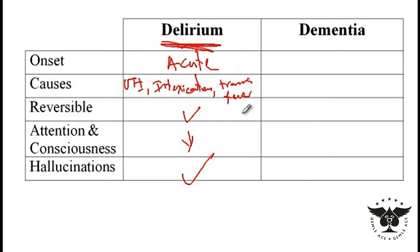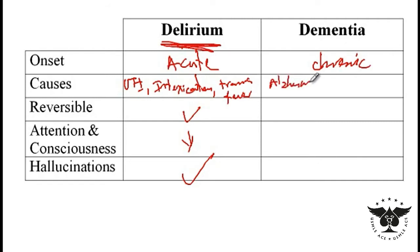Patients with dementia, however, have a usually chronic onset — think of Alzheimer's, it's not like they develop dementia overnight. Different causes include Alzheimer's, multi-infarct dementia, Lewy body dementia, Pick's disease, and so on.